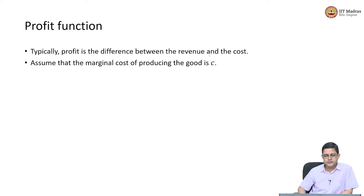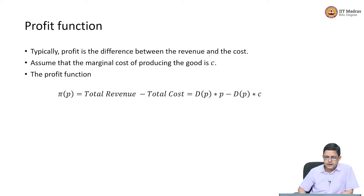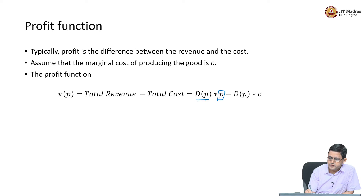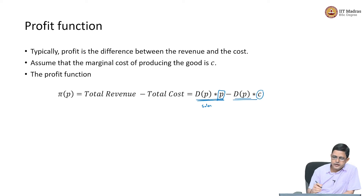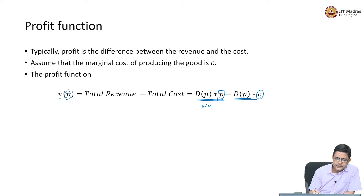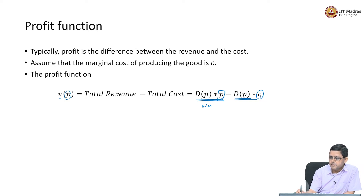What is going to be the profit function? The profit function is the difference between revenue and cost. Total revenue is whatever I sell in the market multiplied by whatever price I charge — that is the net sales revenue coming from sales of goods. C is my marginal cost of producing each unit. How many units do I sell? I sell D(P) units, and therefore my total cost is D(P) times C. So the profit function π(P) — where P indicates it is a function of price — is D(P) times P minus D(P) times C, which is total revenue minus demand multiplied by marginal cost.